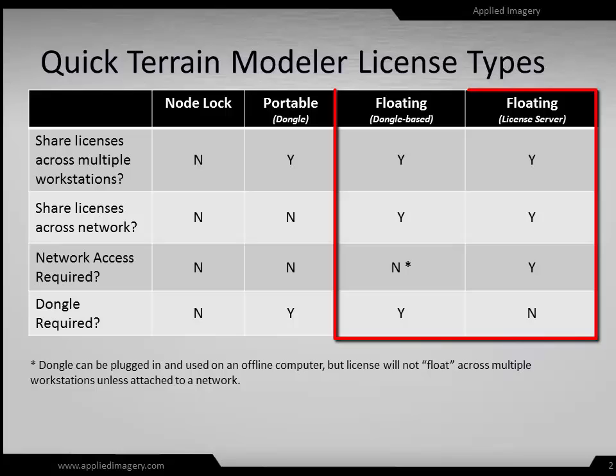Floating licenses come in two versions: one uses a dongle and one uses a license server. While the functionality is very similar, many organizations — particularly in the DoD — forbid the use of dongles in their facilities. In addition, the license server-based floating licenses scale better across larger organizations and are easier to manage.